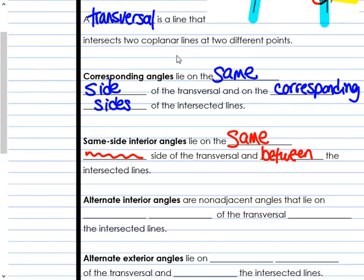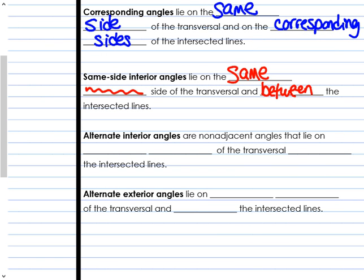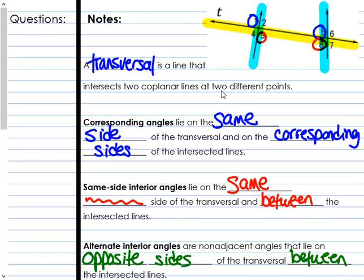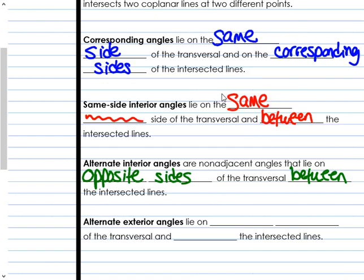Our next one is alternate interior angles. Alternate interior angles are non-adjacent angles that lie on opposite sides of the transversal — opposite, aka alternate — and they are also between the intersected lines. An example would be two and eight. They're on opposite sides of the transversal: two is above the transversal, eight is below the transversal. But they're both between the intersected lines.